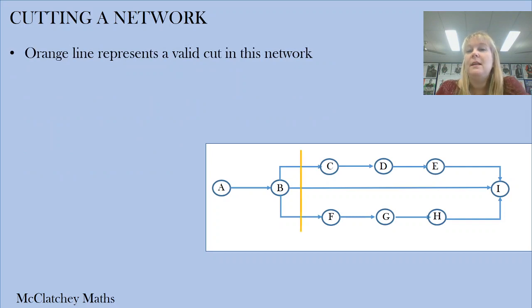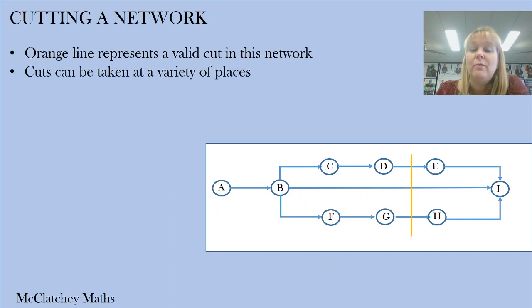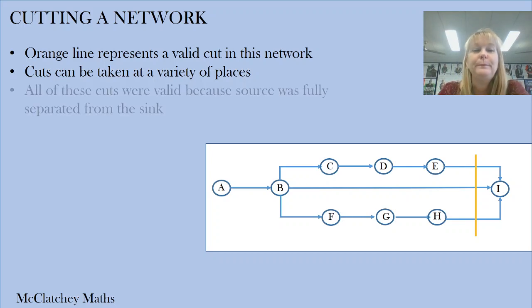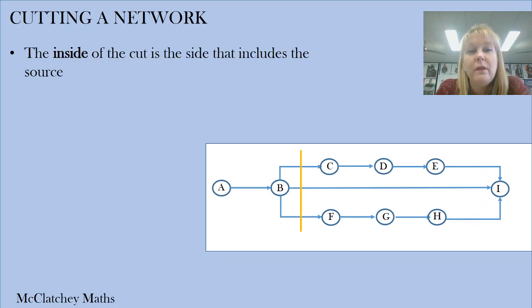I'm going to represent my different cuts through the network using straight orange lines and later on some squiggly lines. You don't have to do it in orange or use a separate color at all. It's a good idea to label your cuts with different names. We can take these at various places through our network. They don't have to be vertical lines, and your networks won't always go from left to right - you can have ones that go from top to bottom. It's important to be flexible. You may need to draw squiggly lines to cut your network in different ways. All of the cuts I've shown you were valid because we completely cut that source off from the sink.